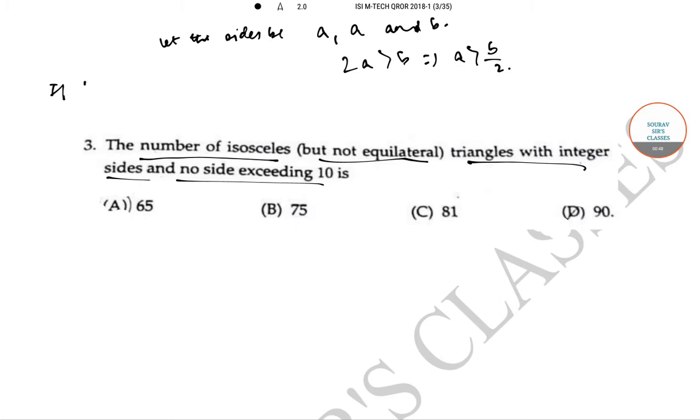Now, if B is equal to 1, A can vary from 2 to 10. So, 9 triangles. If B is equal to 2, A can vary from 3 to 10. So, we have 8 triangles. If B is equal to 3, A can vary from 2 to 10. So, further 9 triangles. Now, if B is equal to 4, A can vary from 3 to 10. So, 8 triangles.